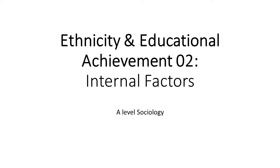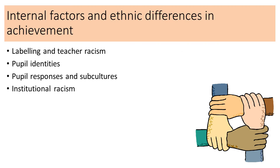Hello and welcome to this video on ethnicity and educational achievement - internal factors. The internal factors we're going to consider are labeling and teacher racism, pupil identities, pupil responses and subcultures, and institutional racism.